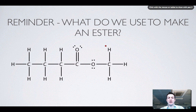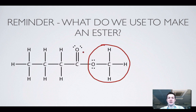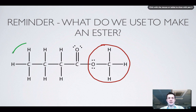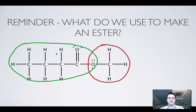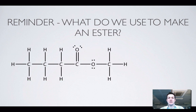Just before we start, let's have a reminder of what we use to make an ester. Here is an ester — it's got a bit that looks like methanol in it, so it's methyl, and it's got a bit that looks like butanoic acid in it, so it's butanoate. So: methyl butanoate.